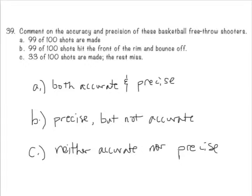B, 99 out of 100 shots hit the front of the rim and bounce off. That means they were precise, they were repeatable, but it wasn't the desired result. So they weren't a very accurate shooter, but they were precise.